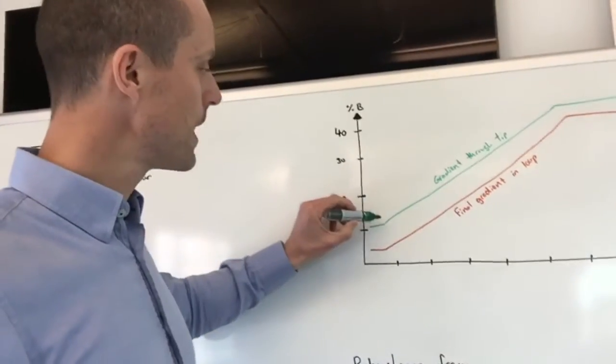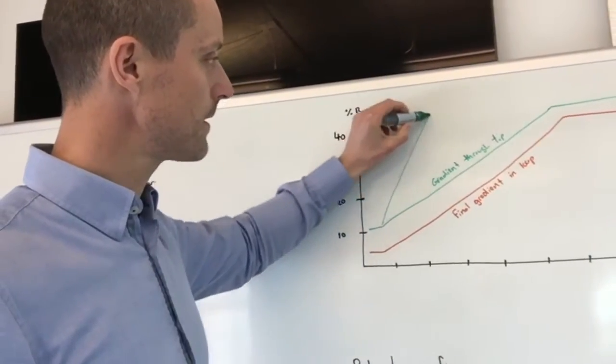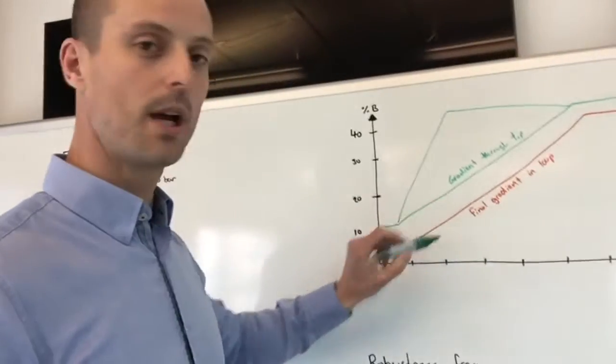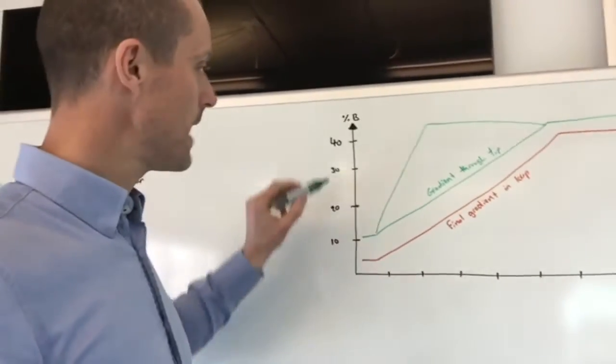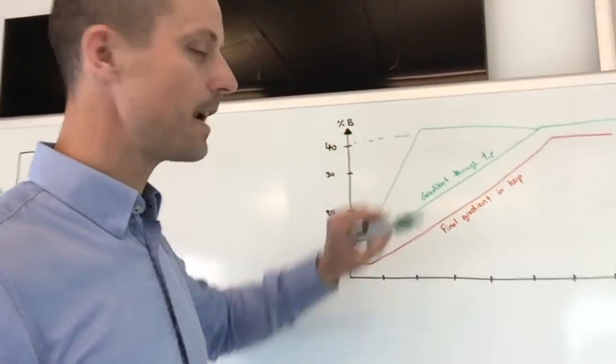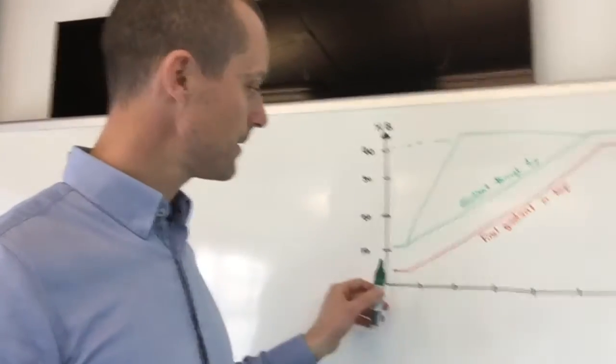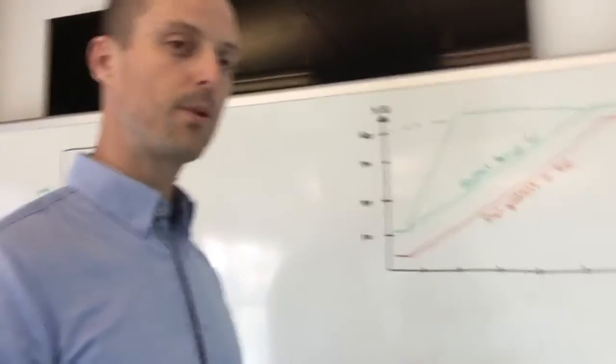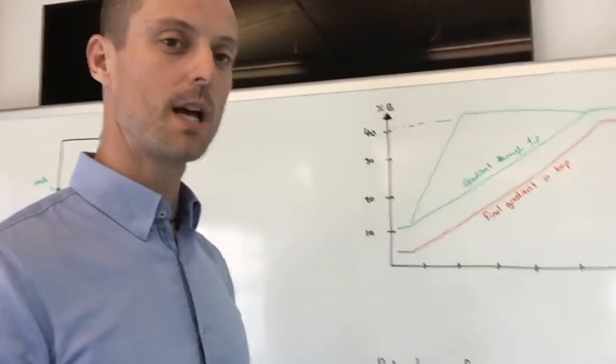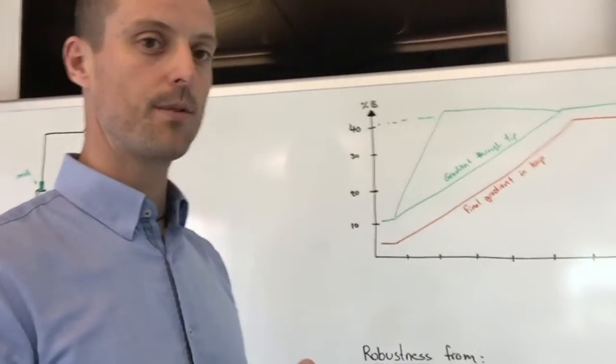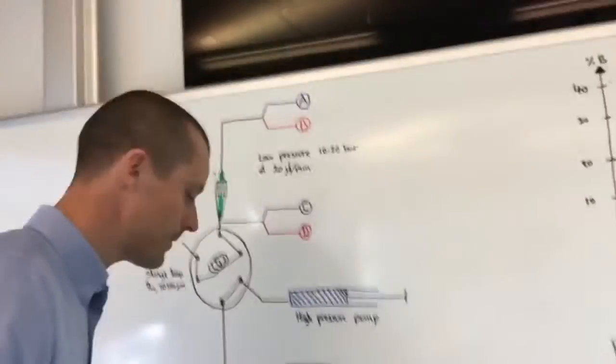But we can also do, for example, a more aggressive gradient and then dilute it into a more shallow final gradient. And we can even do an isocratic elution and still dilute it into a final gradient. We have tried these different approaches and it actually really improves our performance quite a bit.